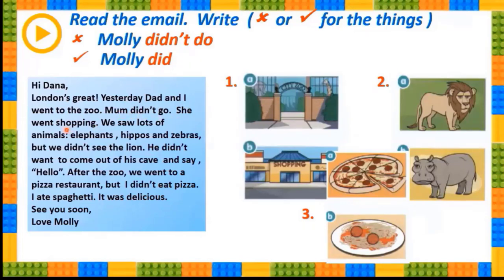'Mom didn't go - she went shopping. We saw lots of animals: elephants, hippos and zebras, but we didn't see the lion. He didn't want to come out of his cave and say hello. After the zoo we went to a pizza restaurant, but I didn't eat pizza - I ate spaghetti. It was delicious. See you soon, love Molly.'